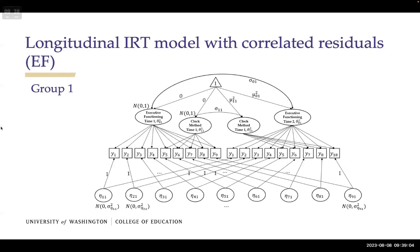By introducing correlated residuals, all fit indices improve: higher CFI, higher TLI, smaller RMSEA, and all chi-square difference tests are significant. The PPP value is not very sensitive for model comparison in this context. The results confirm that correlated residuals meaningfully improve model fit. Regarding the question about what distinguishes this model from a stacked data model: the key difference is having two separate factors over time, which enables estimation of change scores — the difference between the factor at time two and the factor at time one.